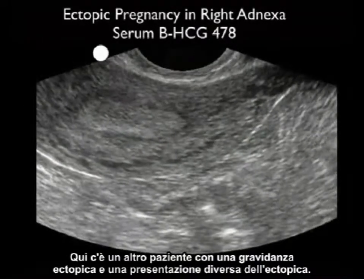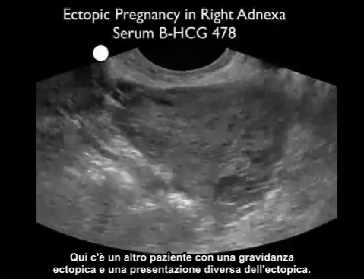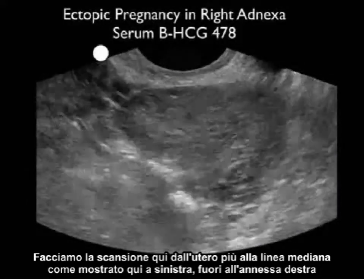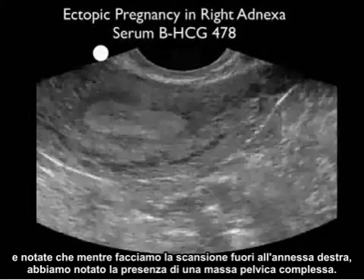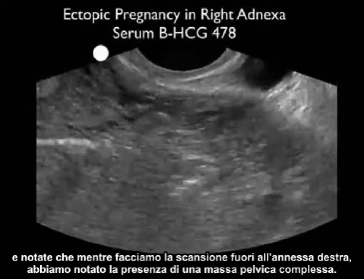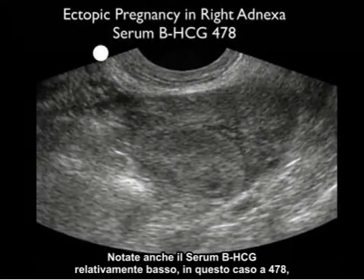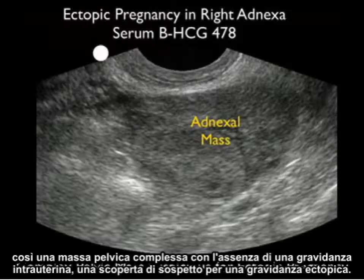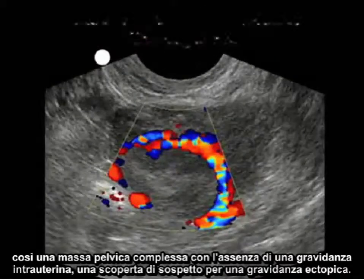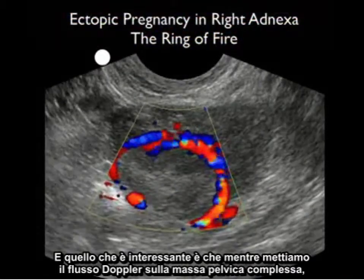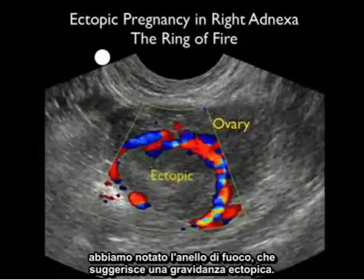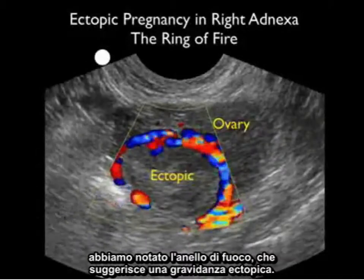Here's another patient with a different presentation of ectopic pregnancy. We're scanning from the more midline uterus out to the right adnexa, where we notice the presence of a complex pelvic mass. Notice also the relatively low serum beta-HCG in this case at 478. A complex pelvic mass with an absence of an intrauterine pregnancy is very suspicious for an ectopic pregnancy. As we put Doppler flow on that complex pelvic mass, we notice the presence of the ring of fire, very suggestive of an ectopic pregnancy.